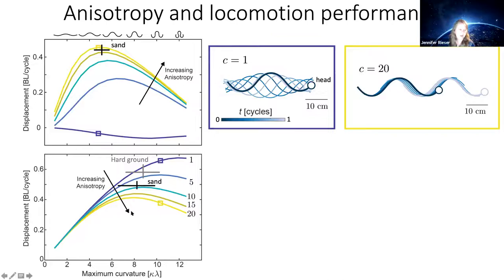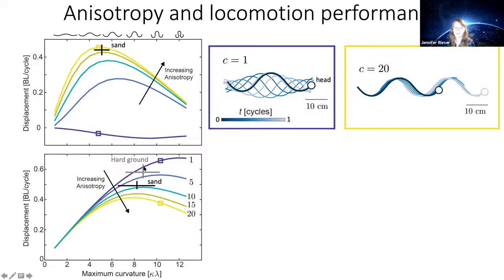Looking at sidewinding, we see the opposite trend: as we increase anisotropy, performance decreases substantially. I also added animal data for sidewinders moving on hard ground and on sand. Interestingly, they do perform worse on sand, where environmental anisotropy also comes in. We don't fully know how those factors interact, but this is consistent with our expectation of decreased performance on sand.